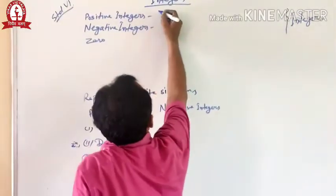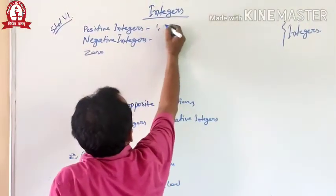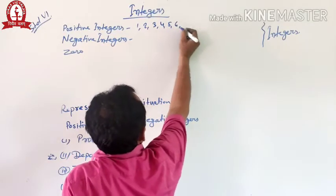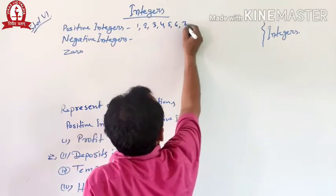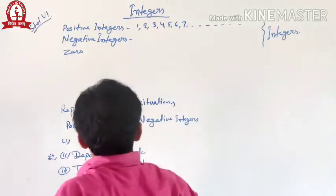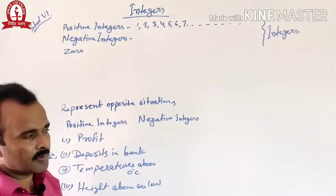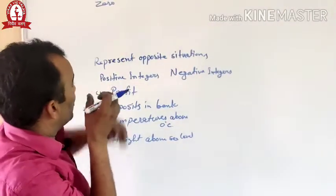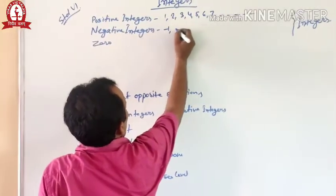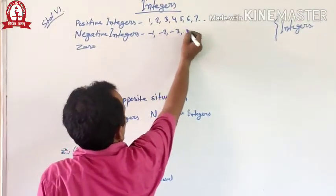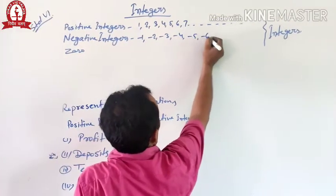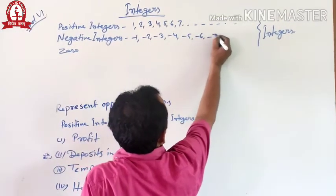Positive integers are all the counting numbers like 1, 2, 3, 4, 5, 6, 7 — these are all examples of positive integers. And negative integers are minus 1, minus 2, minus 3, minus 4, minus 5, minus 6, minus 7 — these are all examples of negative integers.